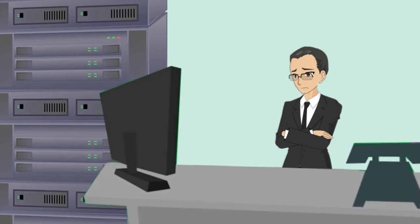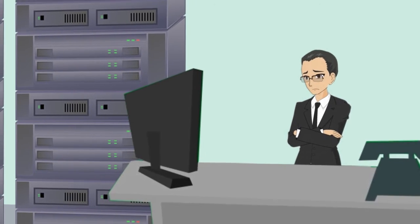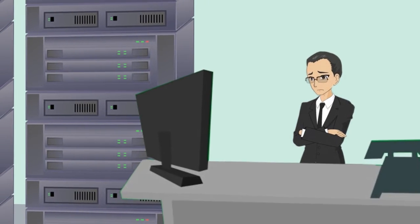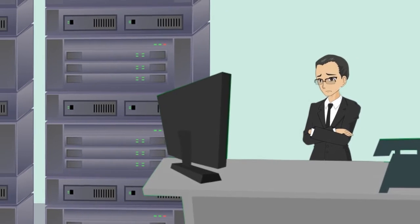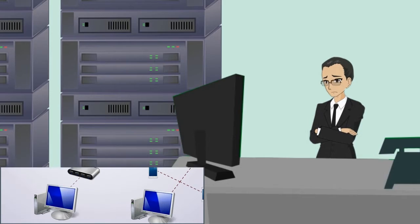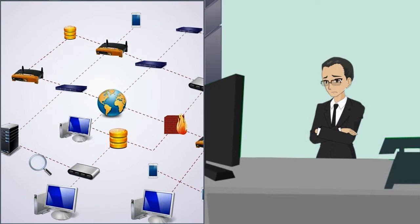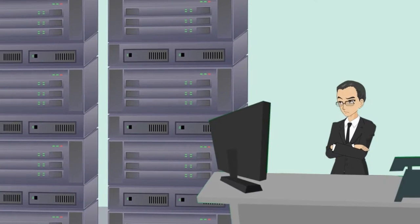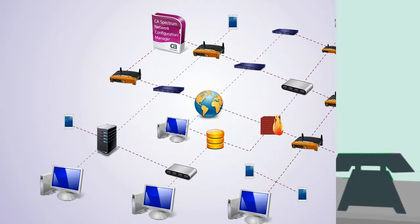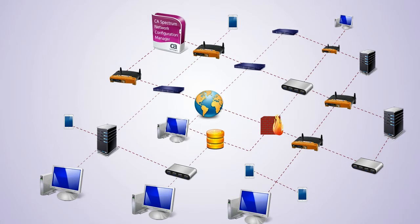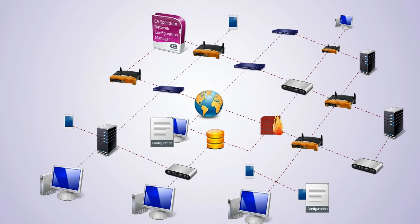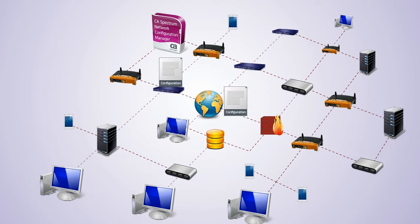The network administrators of Vener Airlines need to manage this complex infrastructure, which includes maintaining these business-critical devices. They need to keep track of all the devices, how they are configured, and make sure that configurations are accurate. They use the CA Spectrum Network Configuration Manager, which allows them to capture, modify, load, and verify configurations for thousands of multi-vendor devices.